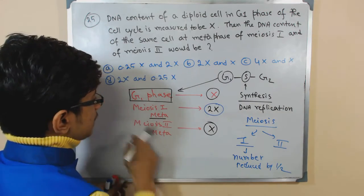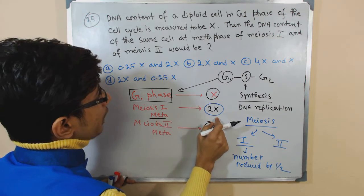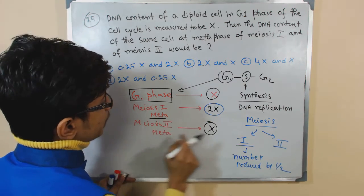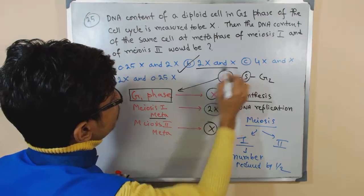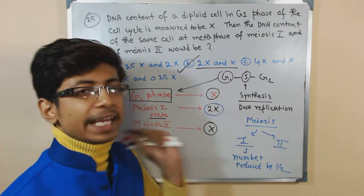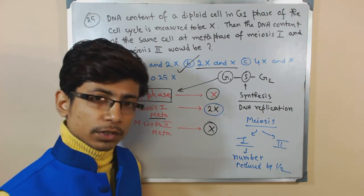So in this case, what we know is that in meiosis 1 metaphase, it will be 2X and in meiosis 2 metaphase, it will be X. So here we go, option B that is telling us that 2X and X, and that is the correct answer for this question.